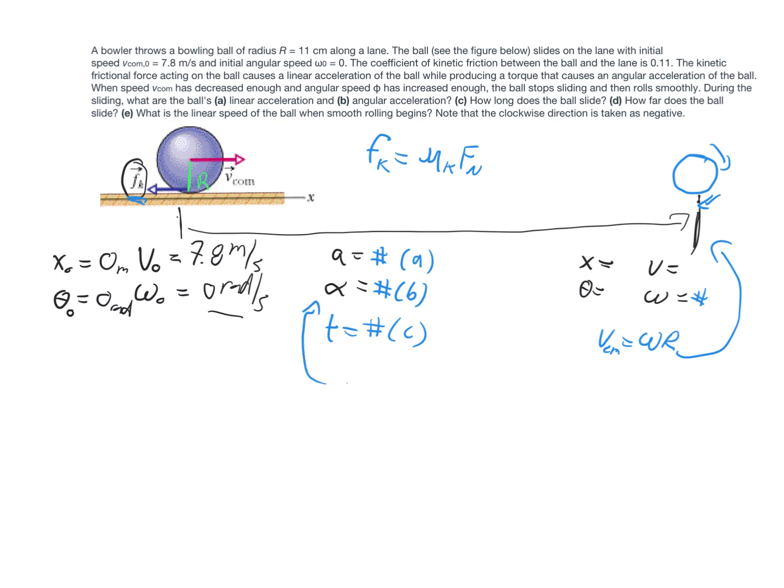Some people want to say, hey, doesn't A of the center mass, A tangential, equal alpha times r? No, only when you're rolling without slipping. So in this case, we cannot use that because we're not yet rolling without slipping. So anyway, just so you're aware, we need to figure out those two things, and then we need to somehow try to figure out the time it takes for it to get to the point of no longer slipping as it goes.